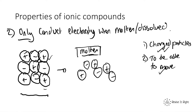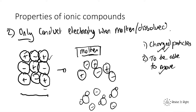When ionic compounds are dissolved in water, they can also conduct electricity. If we have water molecules — H₂O — with ions dissolved around them, we go through the checklist: are there charged particles? Yes. Are they able to move? Yes — the dissolved ions from the ionic compound are much more free to move, and therefore they can carry a charge and conduct electricity.